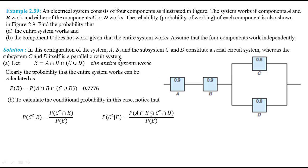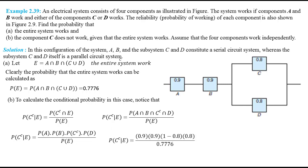The numerator can be written as the probability that component A works and B works and C doesn't work and D works. By applying the law of multiplication for independent events, we multiply the individual probabilities of each event. Substituting the probabilities, we have the probability that C doesn't work given that the entire system works is equal to 0.1667.